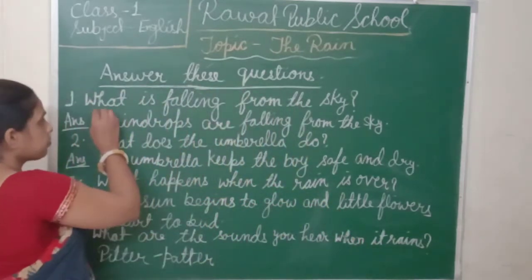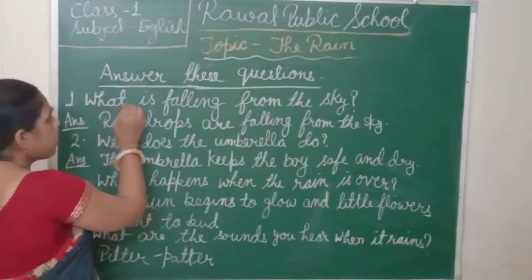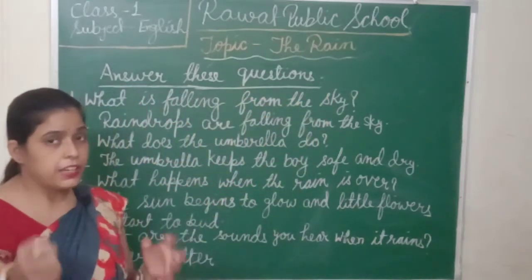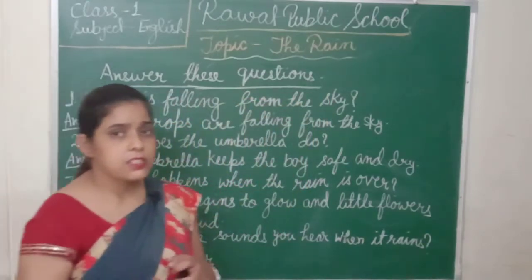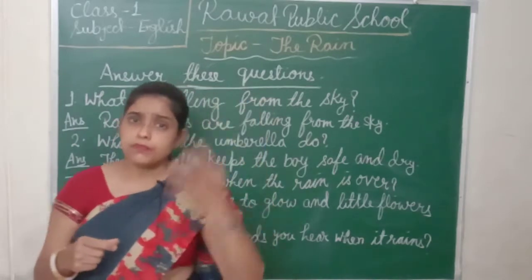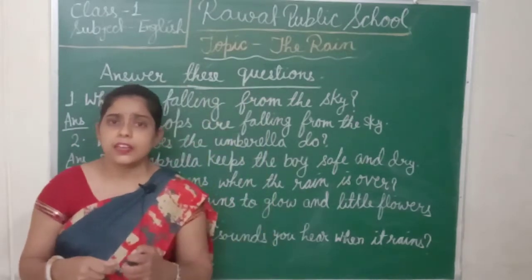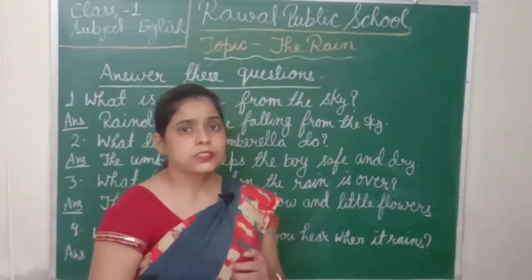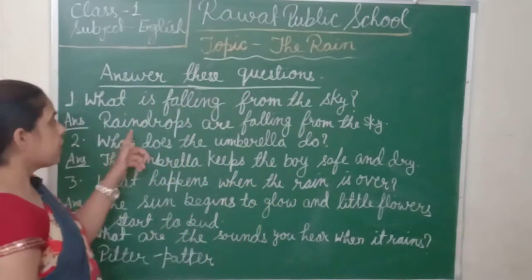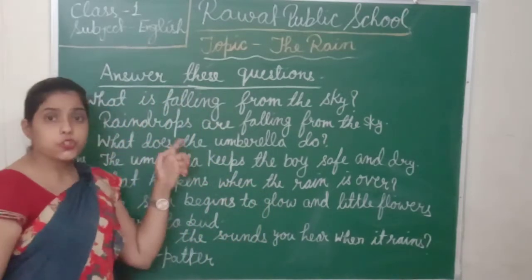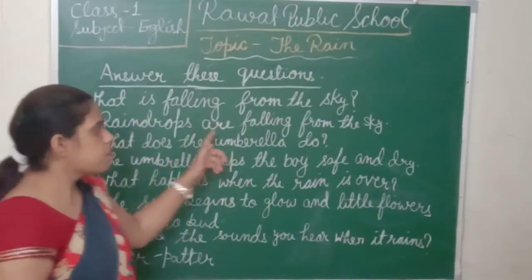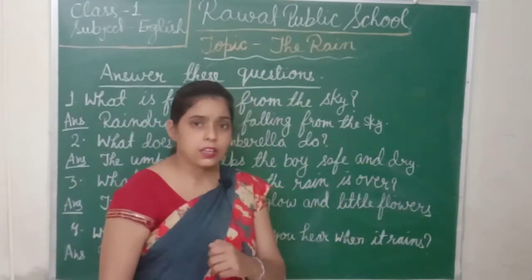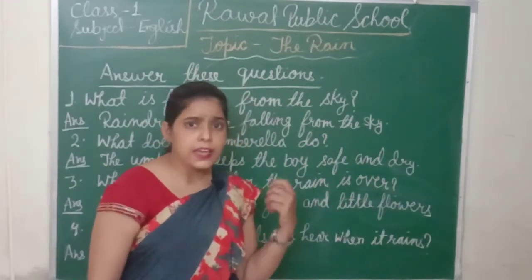Question number one: What is falling from the sky? When it rains, what is falling from the sky? Have you remembered? It is raindrops. Raindrops are falling from the sky.